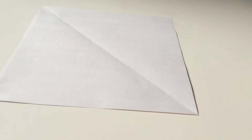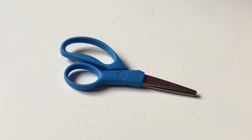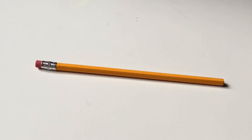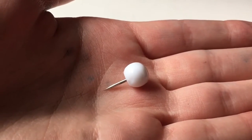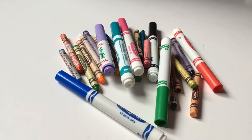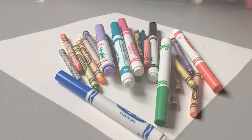So for this DIY, all you need is a square piece of paper, a pair of scissors, a pencil with an eraser on the top, a thumbtack, and if you want, you can also grab some coloring utensils such as markers, crayons, or colored pencils.